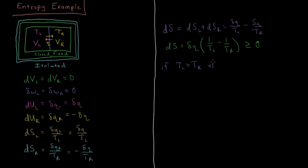Since the bracket is negative, we need dQ to be negative as well so that the entropy change is positive, because negative times negative gives a positive. dQ is the heat flowing into the left, so dQ being negative means heat is flowing from the left to the right. So the temperature of the left goes down and the temperature of the right goes up.